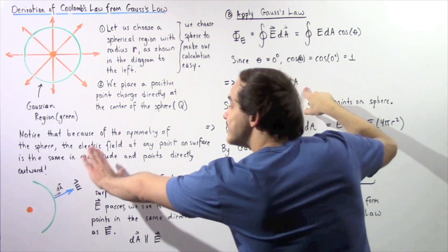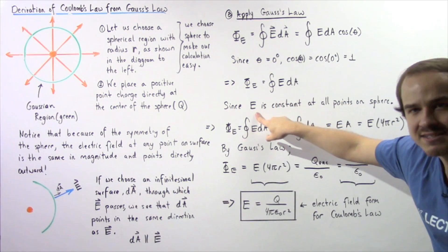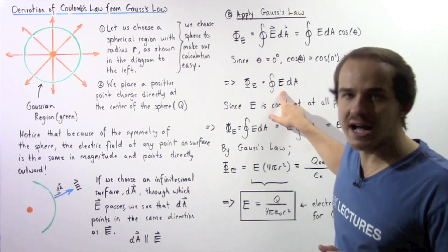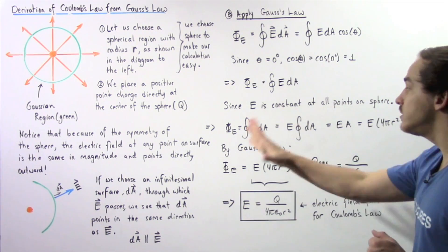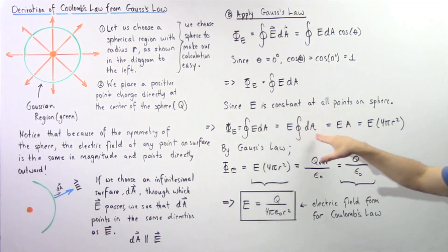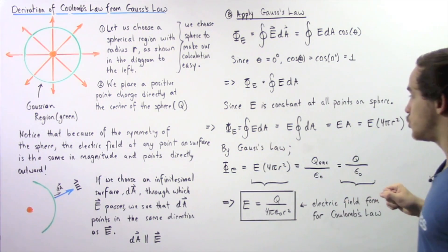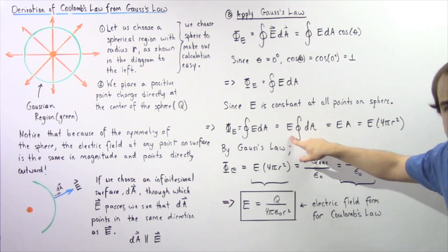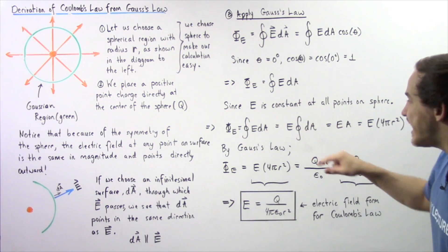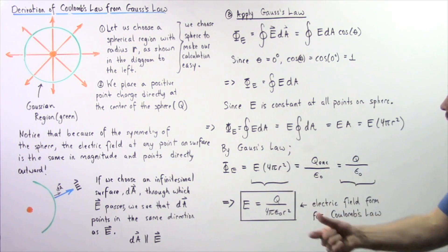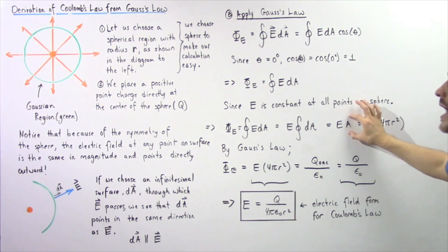Because by the symmetry of the sphere, our E is constant at every single point on the surface of that sphere, and that means our E is a constant. We can take that constant out of our integral as shown. Now we have our electric flux is equal to our E, a constant multiplied by the closed integral of dA. And if we evaluate this, we simply get the product of E multiplied by the surface area of our sphere.